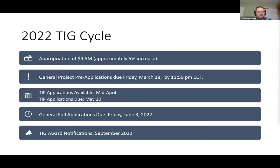General projects — not the assessment projects — require pre-applications, and the deadline for those is this Friday at 11:59 p.m. Eastern Daylight Time. For the smaller technology improvement projects (TIPs), those are handled through a separate application process with no pre-application. The system for applying for TIPs launches in mid-April, with guidance documents also coming mid-April. The TIP application deadline is May 20th. For general projects, full proposals are invited next month, with a full proposal deadline of Friday, June 3rd, and award notifications in September.